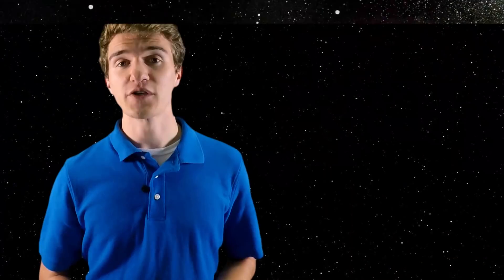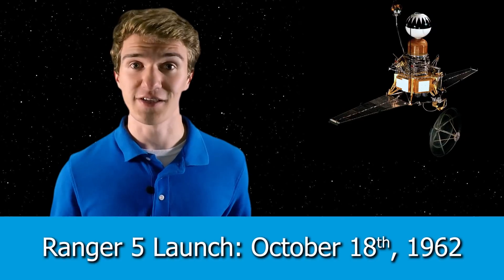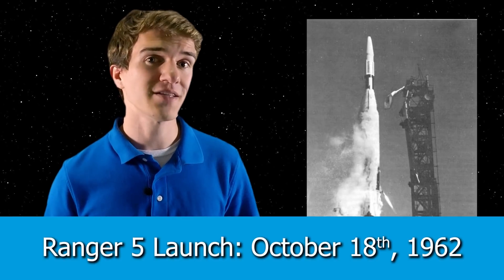The Ranger 5 spacecraft, as you can probably guess, had the same design as the Ranger 3 and Ranger 4 spacecraft. It ended up launching on October 18th of 1962, which was around six months after the Ranger 4 failure. Again, the launch was a success, and a lot of the early maneuvers went well, but just a couple hours into the mission, the solar panels didn't deploy, and therefore, the mission, again, was a failure.